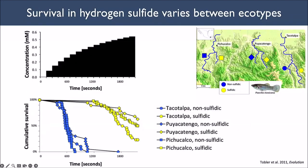Survival in hydrogen sulfide varies among ecotypes. In a time-course experiment where hydrogen sulfide concentration increases on the x-axis and cumulative survival is tracked, after about 600 seconds non-sulfidic fish start to lose equilibrium and survival decreases, whereas sulfidic fish can survive for longer in hydrogen sulfide — though there is a limit and at some point they too become overwhelmed.